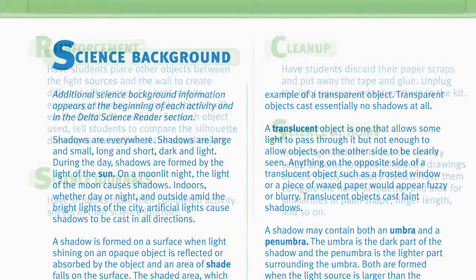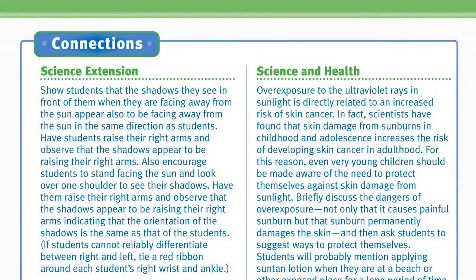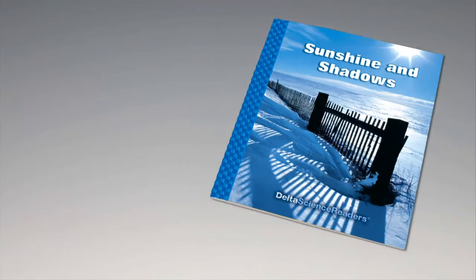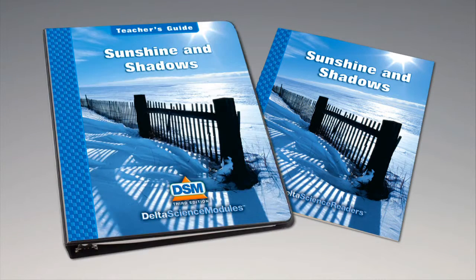To conclude the activity, have the students discard their paper scraps and put away the tape and glue. Unplug the light sources and return them to the kit. For science background, reinforcement activities, curriculum connections, and information about the Delta Science Reader, please consult your DSM Teacher's Guide.